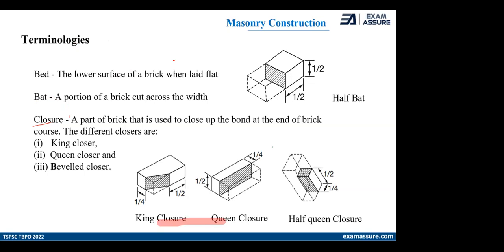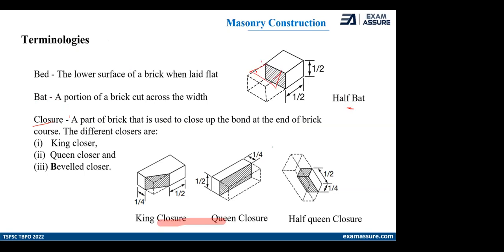Bed: any layer, any course — be it a stretcher or a header — is called a bed. One layer of stretcher laid down is a bed; then another layer will come, another bed, then another layer — one by one layers come and each forms a bed. Next one is bat. Bat is half of the brick — the brick is cut longitudinally from the length. It is your half brick.